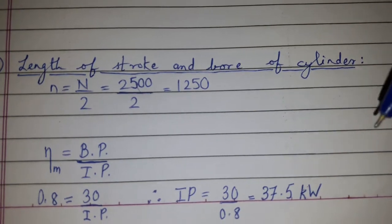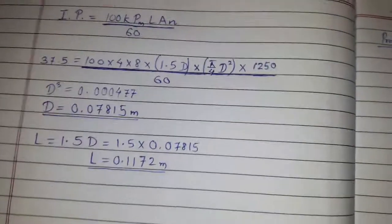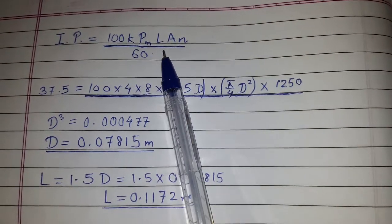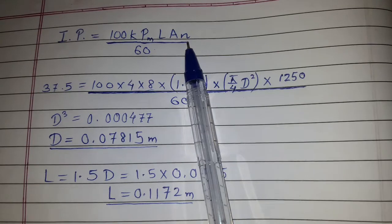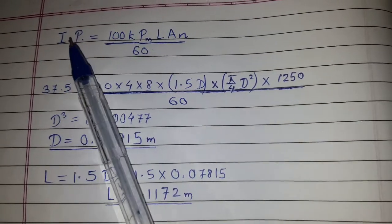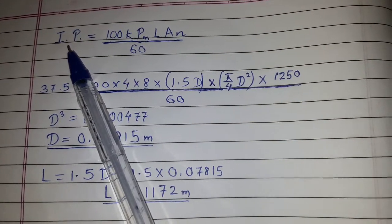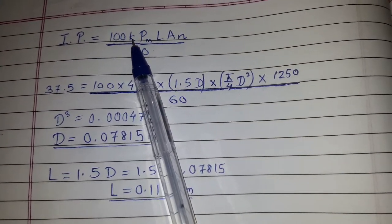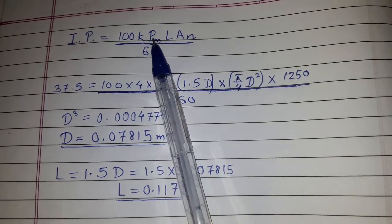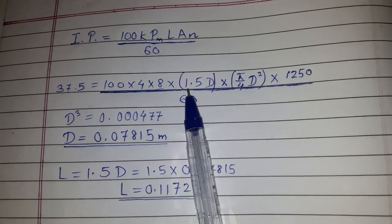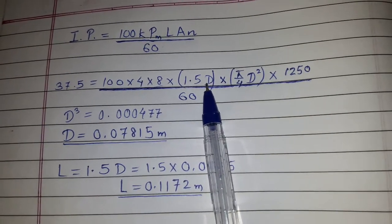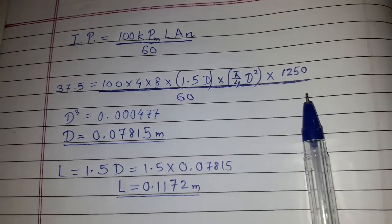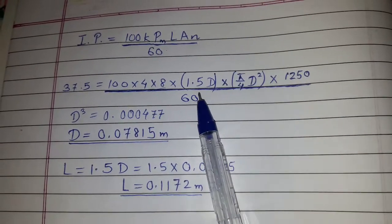So once we know the IP, we can use the formula for IP. IP equals 100K pm capital L capital A small n divided by 60. We now know the value of IP which we have calculated just now. K is 4 because here it is given that is 4 cylinder. Pm is given as 8 bar. Capital L we know that capital L equals 1.5 capital D, and A is pi by 4 D squared into small n, that is 1250 divided by 60.